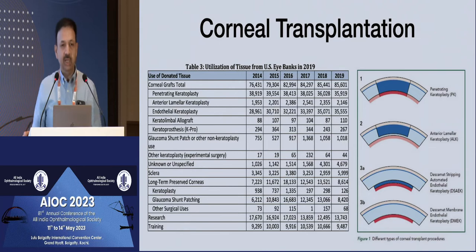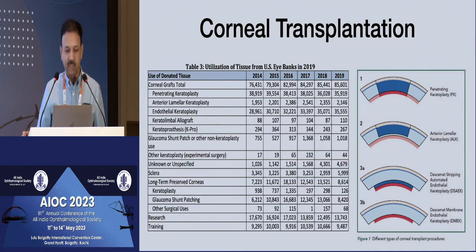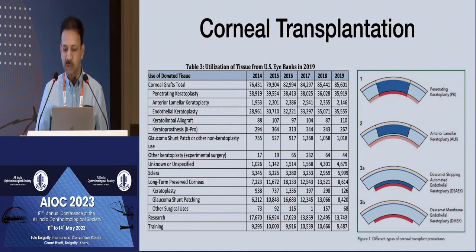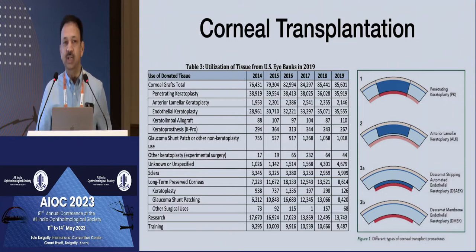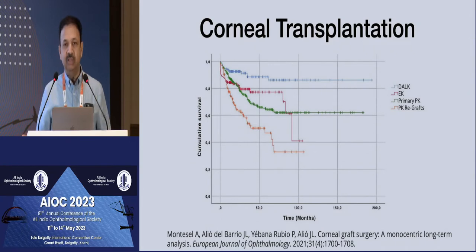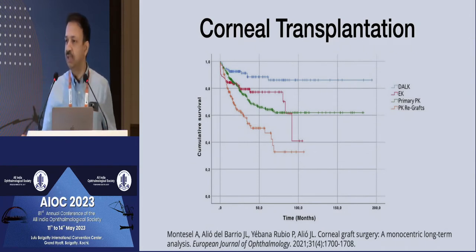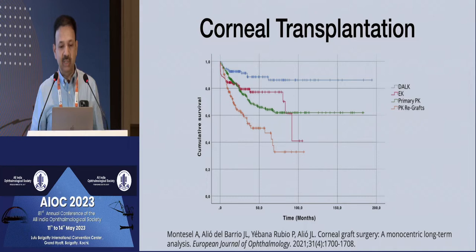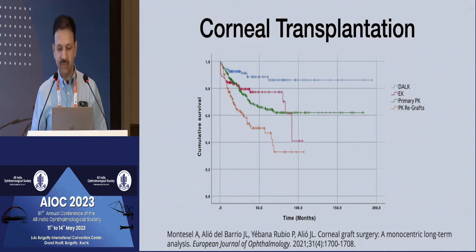If we look at corneal transplantation over the past two decades, we have witnessed a shift from full-thickness penetrating keratoplasty to lamellar keratoplasty. Looking at the statistics worldwide, we see that more and more people now perform either anterior lamellar keratoplasty such as DALK, or posterior lamellar keratoplasty such as DSEK, DMEK, or ultra-thin DSEK. If we look at the survival curves of these various grafts, we see that definitely the survival is longer because the host endothelium is preserved, and among the corneal transplants, endothelial keratoplasty survival is better than re-grafts and primary PK.